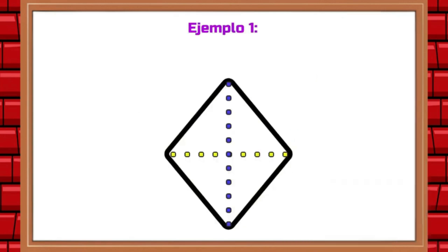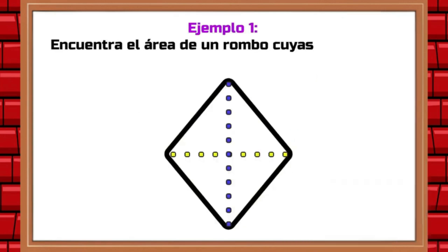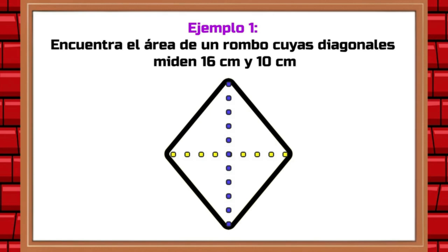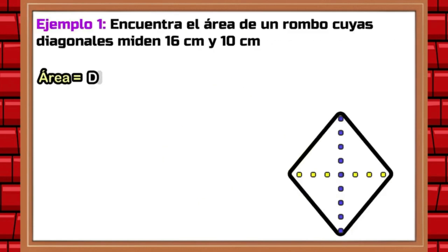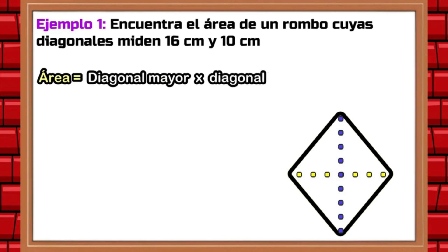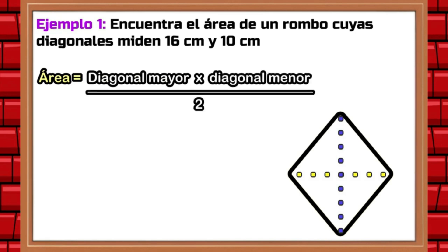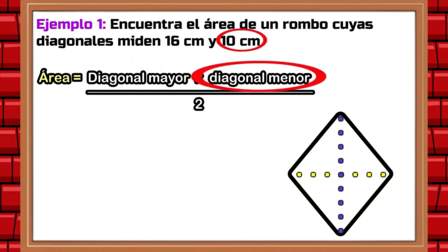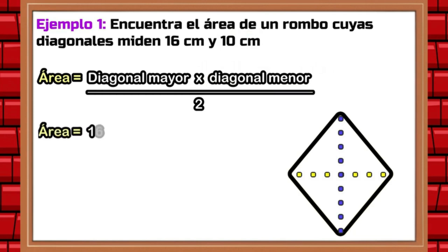Find the area of a rhombus whose diagonals measure 16 centimeters and 10 centimeters. In order to solve this exercise, we will use the formula that we just reviewed. The formula states that the area is equal to the major diagonal multiplied by the minor diagonal, and then the result is divided by two. We substitute the values into the formula: the major diagonal measures 16 centimeters and the minor diagonal measures 10 centimeters. So the formula is: area equals 16 centimeters times 10 centimeters divided by two.